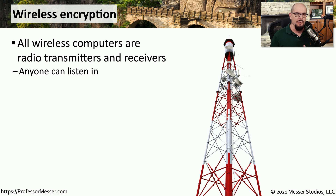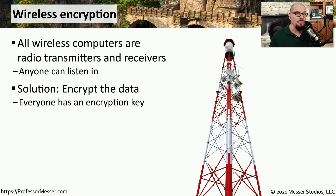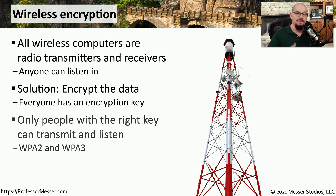The problem with wireless networks is that information is going over the air. If you know what frequencies are in use and have the proper equipment, you can grab that information from the air and examine it. This means that if you want to send something private over the wireless network, you need to encrypt the data so that if someone intercepts it, they wouldn't be able to read it. You have to have the right encryption key to send and receive information over the wireless network.